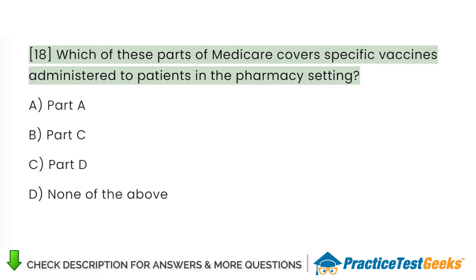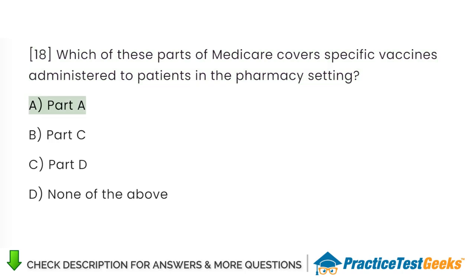Which of these parts of Medicare covers specific vaccines administered to patients in the pharmacy setting? A. Part A. B. Part C. C. Part D. D. None of the above.